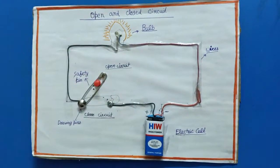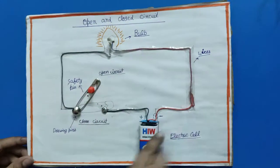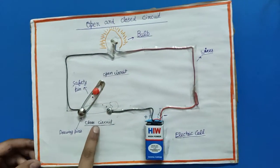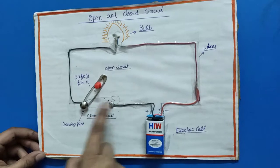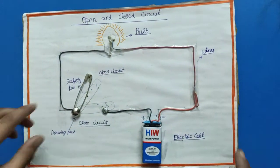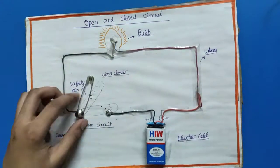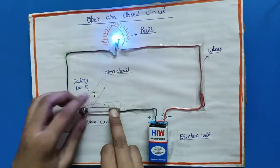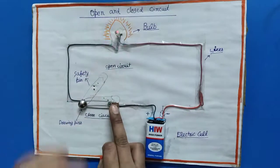...two drawing pins and a safety pin. You can see this is an open circuit. The electricity flows because these drawing pins are of steel and my safety pin is also of steel. That's why it conducts the electricity and this is how it's working.